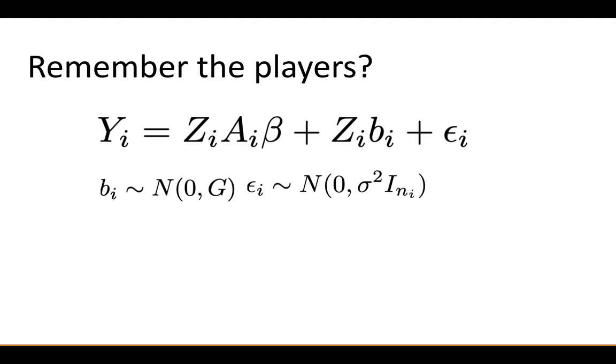So here are the players. This is the all-in-one mixed model. Everything with an I subscript is referring to a subject-specific thing. YI would be the vector of reaction times for a subject, ZI is the design matrix for that subject—in this case a column of ones. AI, in almost all these examples until later on, will be an identity matrix. AI is where you put your between-subject design matrix regressors.